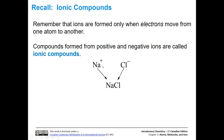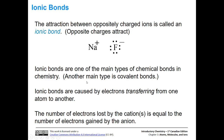We have sodium cation and chloride anion getting together — opposite charges attract — and form sodium chloride ionic compound. This attraction between these oppositely charged ions is called an ionic bond. The sodium is positively charged, the fluoride anion is negatively charged, and those two are attracted to each other and form an ionic bond.